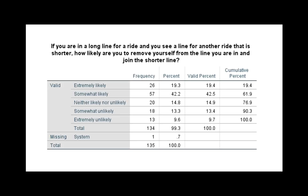For the jockeying question, I used SPSS to analyze the frequency table. I looked at the valid percent column, which excludes the one missing response, so the sample size n equals 134. We can see that approximately 62% of the people in the sample are either somewhat likely or extremely likely to jockey between amusement park rides — about 62% are at least somewhat likely to jockey.